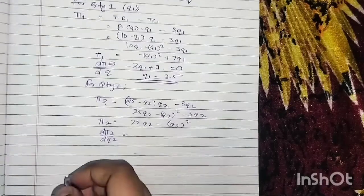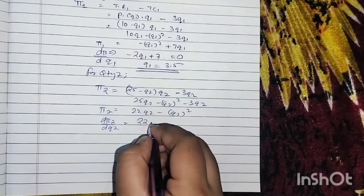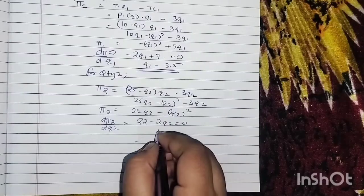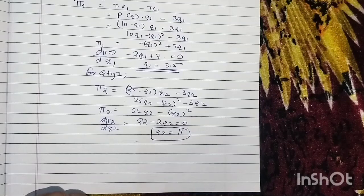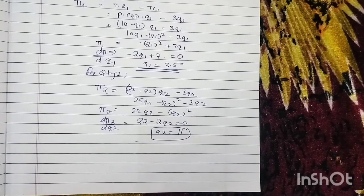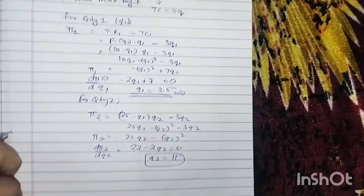To obtain the maximum optimal quantity, you get 22 - 2Q2 = 0, which gives you Q2 = 11. So you have got the separate quantities. Now you can also find out the price by putting these quantities in the price function.